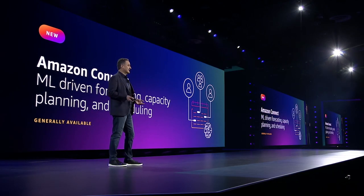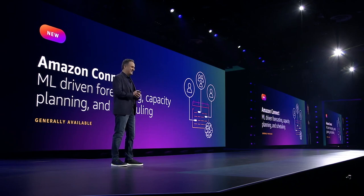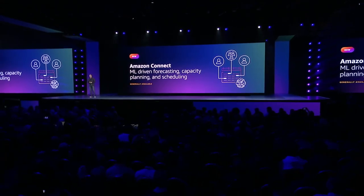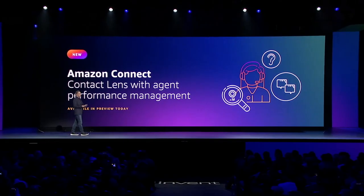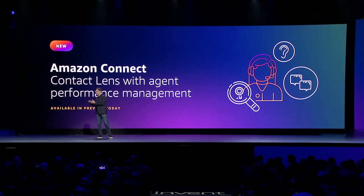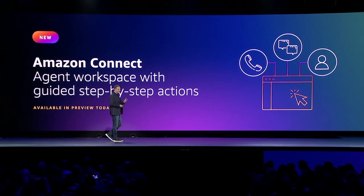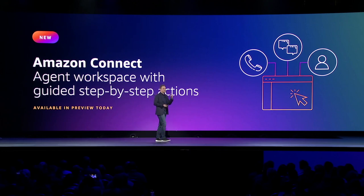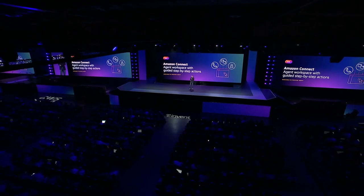We're introducing new forecasting, capacity planning, and scheduling capabilities to help contact center managers optimize agent schedules and ensure they have the right agents at the right time. Second, we're previewing new agent performance management capabilities in Contact Lens, Connect's real-time analytics, reducing the time managers spend identifying performance issues and coaching agents. Third is a new user interface that guides agents through customer interactions so they can resolve issues even faster. Connect is a great example of how the cloud is removing constraints to reimagine challenges like delivering better customer service.